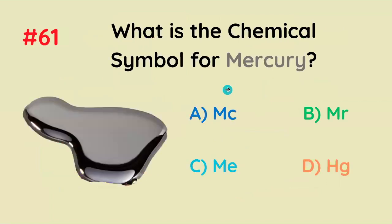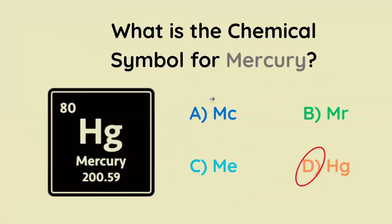What is the chemical symbol for mercury? MC, MR, ME, or Hg? It's going to be Hg.